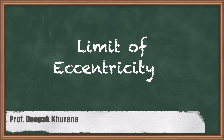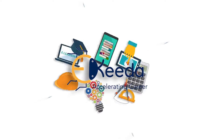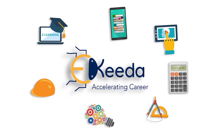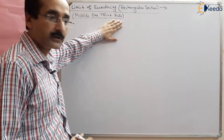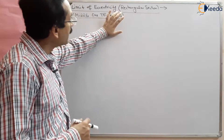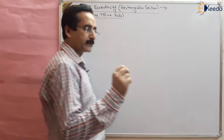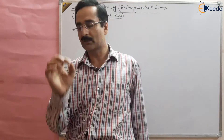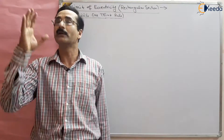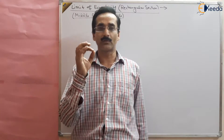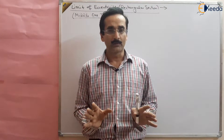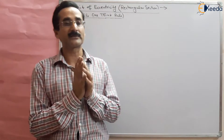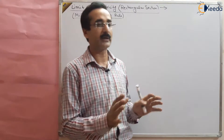Hello students. In this session we are going to study the limit of eccentricity for rectangular section. This is also called the middle one-third rule. We are talking about rectangular sections. Compressive members like columns and concrete structures have very good strength in compression but very poor strength in tension. So tension should be avoided — no tensile stress should be developed in compressive members like concrete columns.